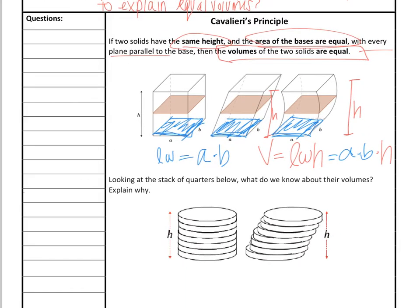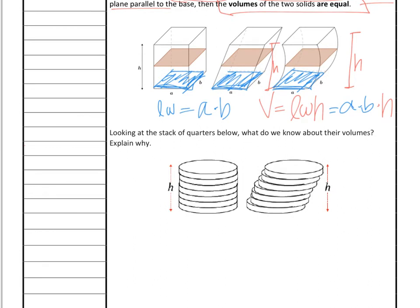We're going to take a look at two examples and then you'll be able to practice. Looking at the stacks of quarters below — what do we know about their volumes and explain why? First, you want to count the quarters. Each stack has seven quarters, so the height is equal to seven.